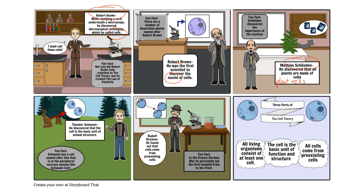Theodor Schwann discovered that the cell is a basic unit of animal structure — in other words, he was the first to see animal cells. Then it was found that cells have to come from somewhere, and it was stated that they have to come from pre-existing cells.